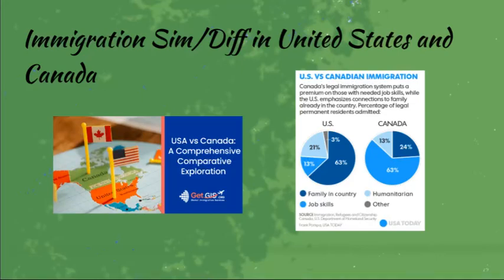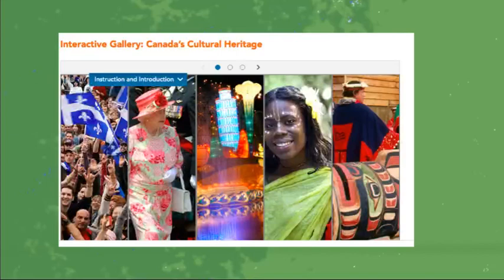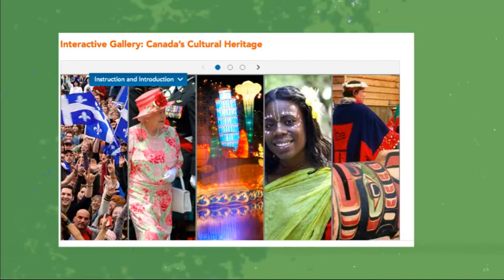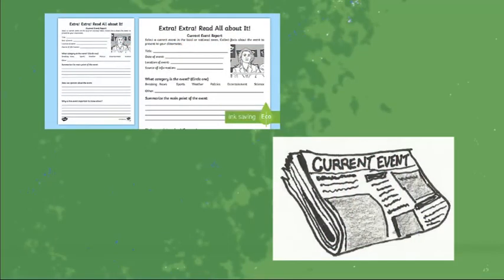We'll look at that through visual graphs and pie charts that we are practicing to use. We'll also look at an interactive gallery for Canada's cultural heritage and see how this compares to the U.S. You can consider whether there actually is a cultural heritage there, while considering the Native American perspective or how that was the initial culture of the people there before the land was officially occupied and settled.